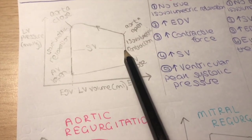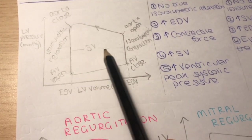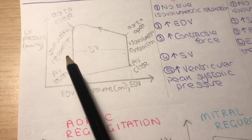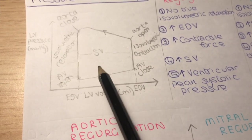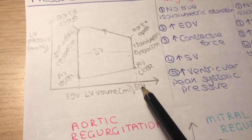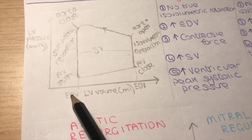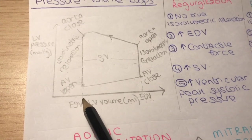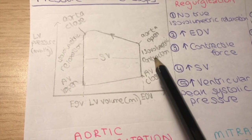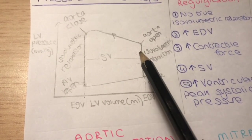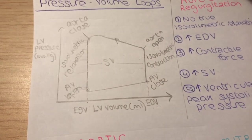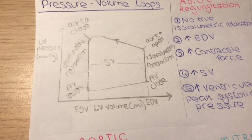This over here is referred to as the stroke volume. The stroke volume is the difference between the end diastolic volume and the end systolic volume — it is essentially how much blood is pumped out of the heart.